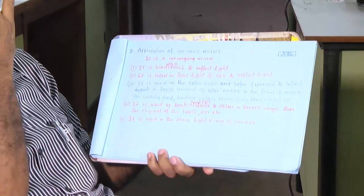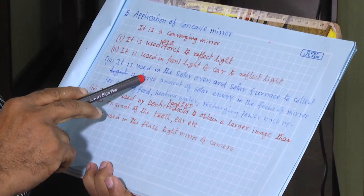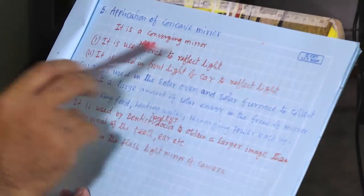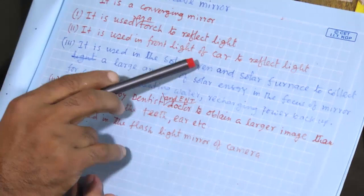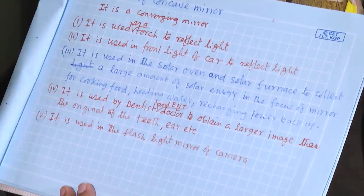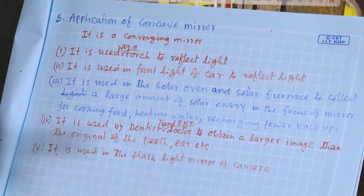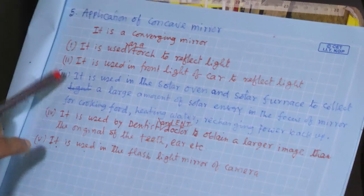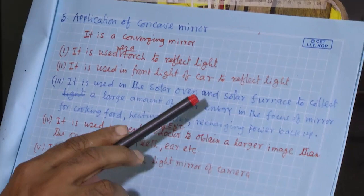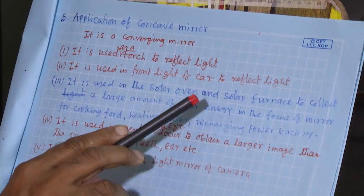Second, in all cars you will see there is a bulb, and there also we use the concave mirror to reflect the light. It is used in the front headlight of a car — same purpose as in the torch I showed you — to reflect and focus the light in front of the car to see the road.